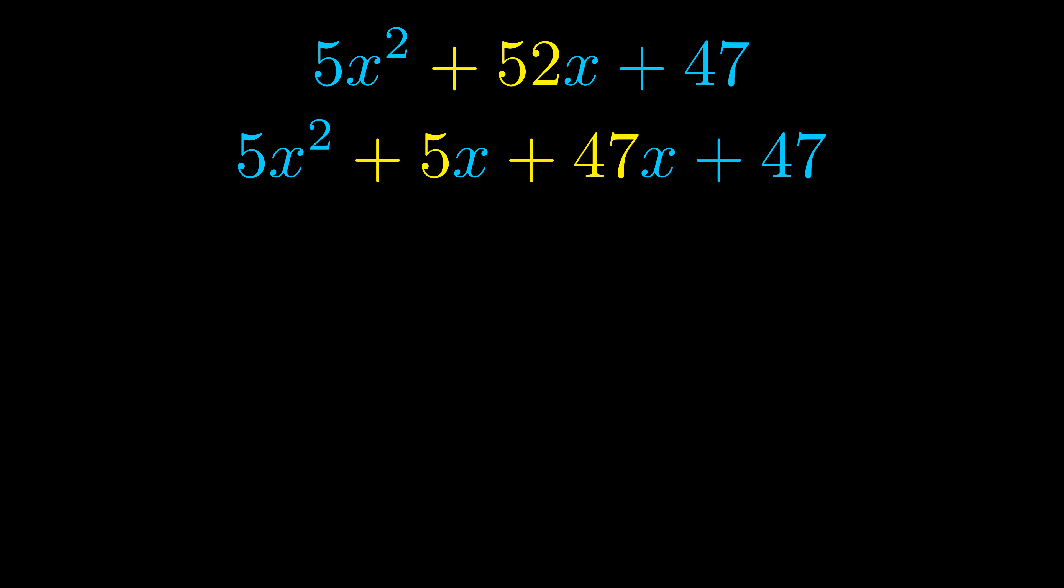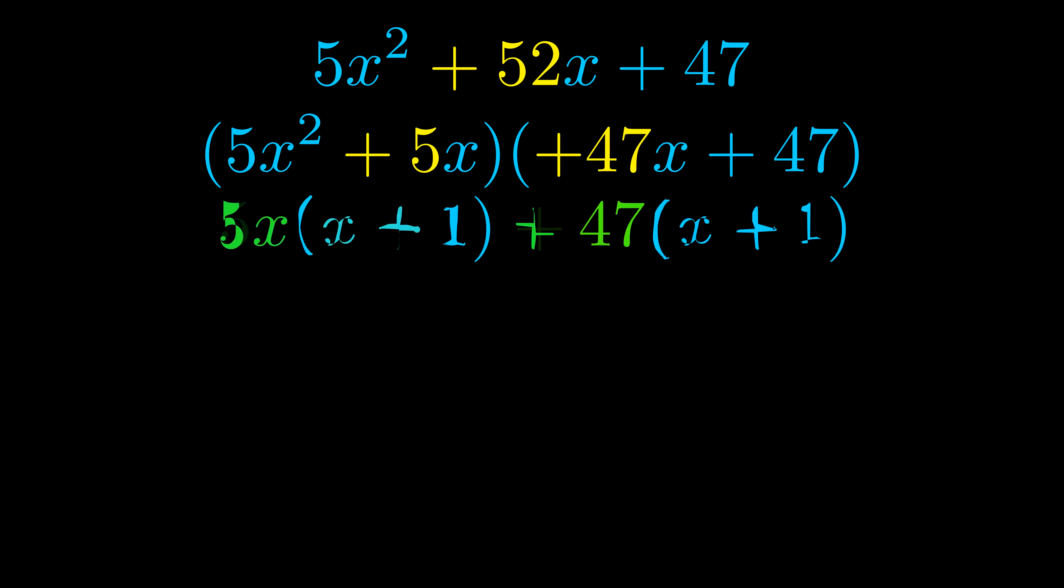Once we've done this, we put parentheses around the first term and the last term. We do that so we can take the greatest common factor out of both terms. We can see the greatest common factor is now outside in green.